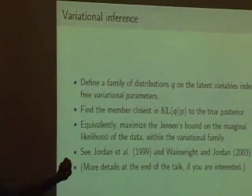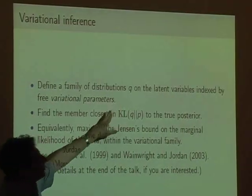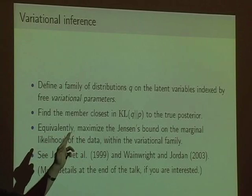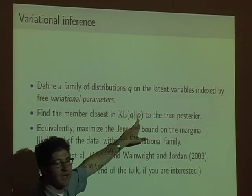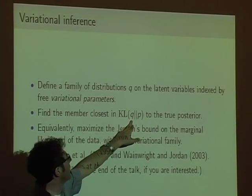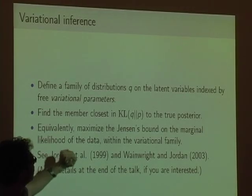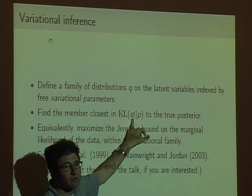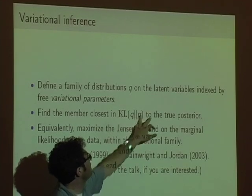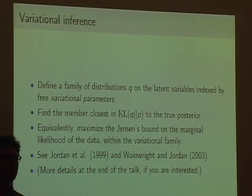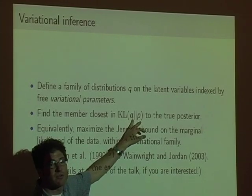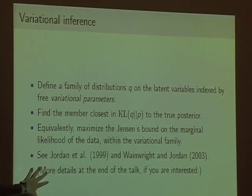Variational inference defines another family of distributions Q on the same space as the distribution you care about, then finds the member of that family closest in KL divergence to the true posterior P. The idea is that if you define a simple family that doesn't contain your actual posterior, you can find a local optimum of that optimization problem. You're trading off not knowing when the MCMC chain has converged versus not knowing what assumptions you're making by simplifying Q, but at least knowing when you reach a local optimum.